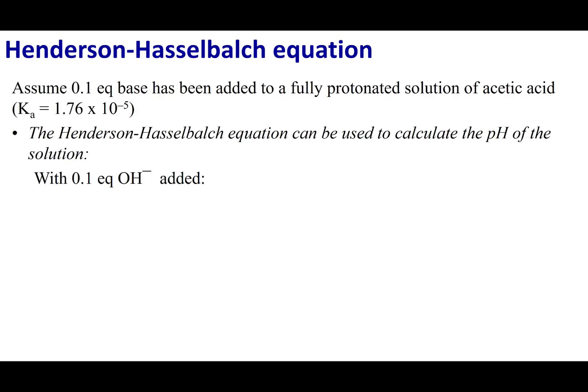Let's practice using the Henderson-Hasselbalch equation. Assume I have acetic acid, which has a Ka of 1.76 × 10⁻⁵. I'm going to add 0.1 equivalents of OH⁻. What I mean by that is if I had 1 molar acetic acid, my concentration of OH⁻ is 0.1. I want you to run this calculation using the Henderson-Hasselbalch equation.